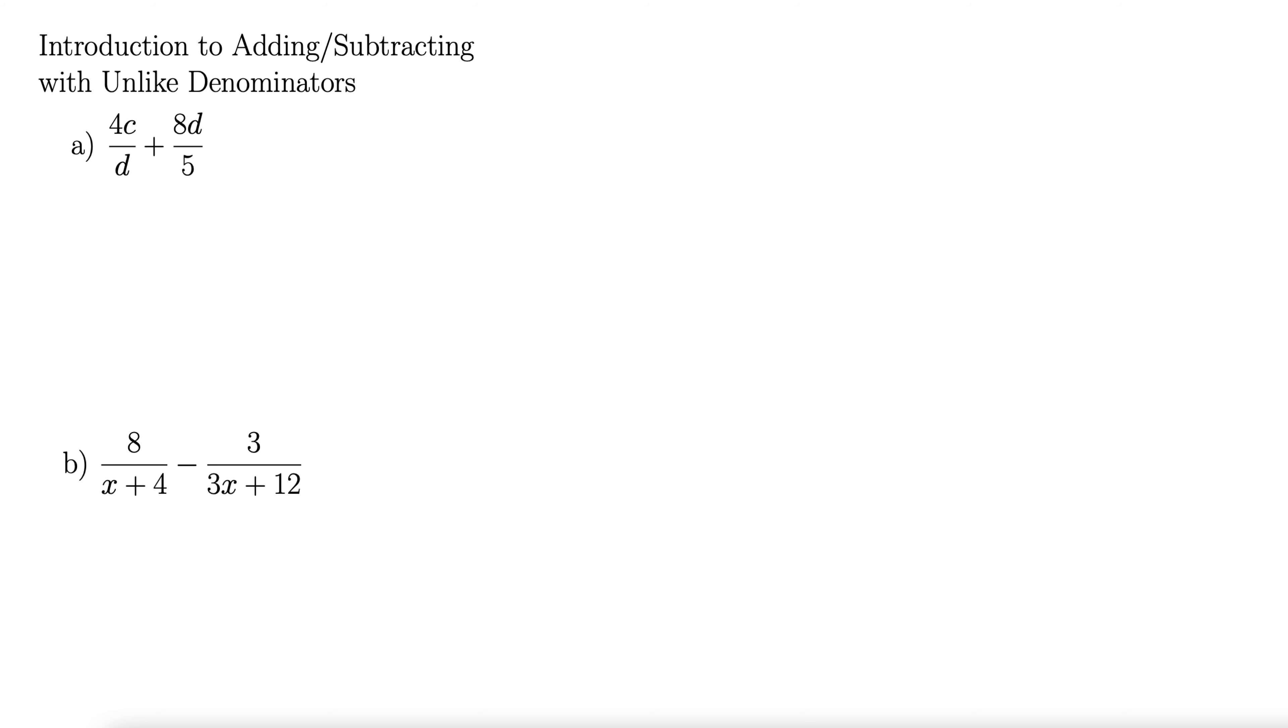Here we aim to introduce adding and subtracting rational functions with unlike denominators, which is substantially harder than when we have the same denominator in each term. So let's take a look here. We have 4c divided by d plus 8d divided by 5. We want to add those two together and there are some steps for that.